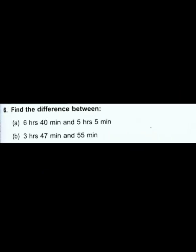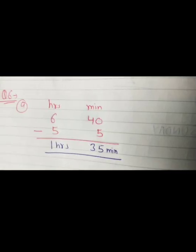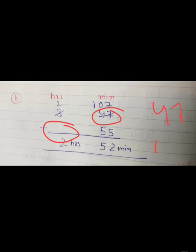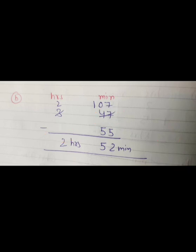Question number 6 — find the difference. Part A: 6 hours 40 minutes minus 5 hours 5 minutes equals 1 hour 35 minutes. Part B: 3 hours 47 minutes minus 55 minutes. Since 47 is less than 55, we borrow 1 hour and add 60 to 47, giving 107 minutes. Subtracting gives 2 hours 52 minutes.